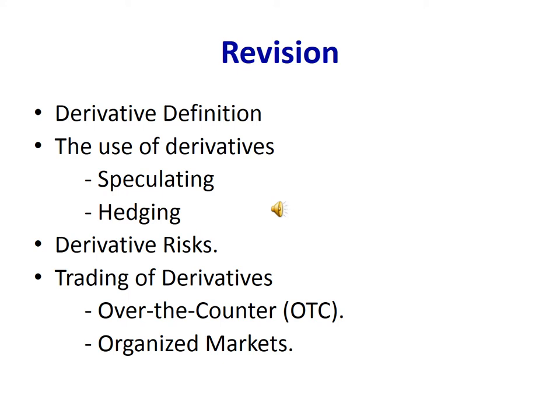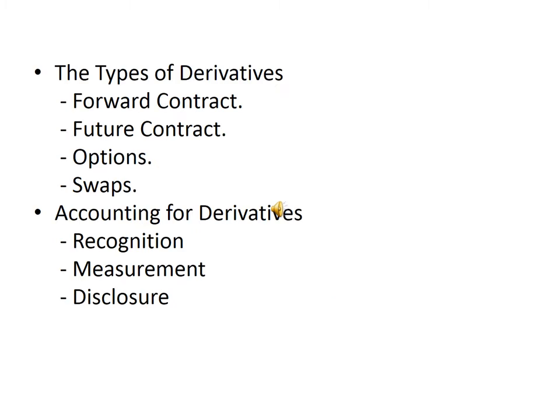This is a revision to summarize the topics which we have studied in this course. Please make sure you can understand and explain all these points: derivative definition, the use of derivatives, speculating or hedging, derivative risk, trading of derivatives over-the-counter and on organized markets, and the types of derivatives — forward contracts, options, and swaps.